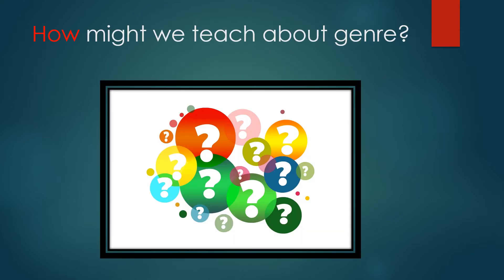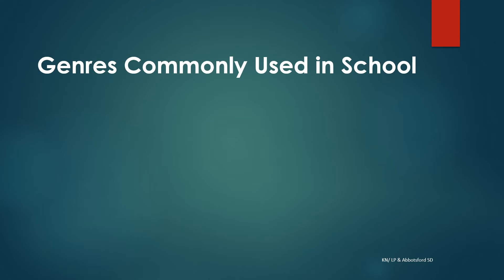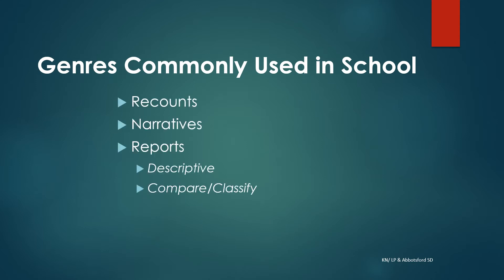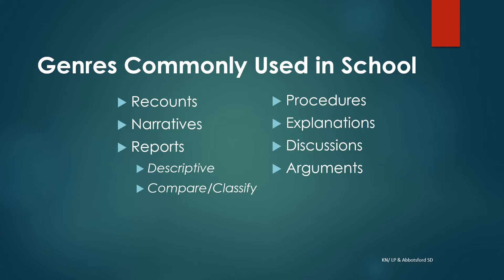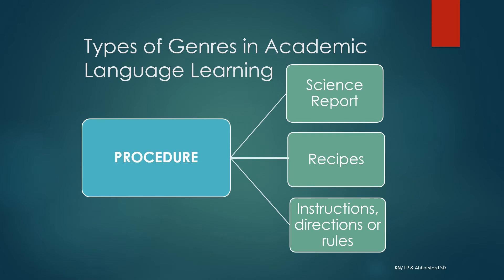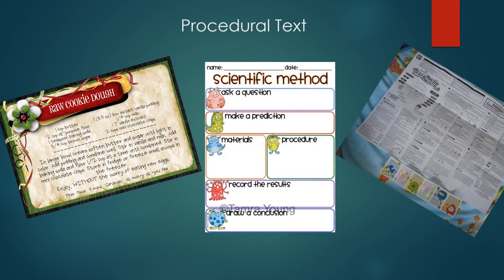Now that we know what genre is and why it's important, let's consider how we might teach about genre. Here are the main genres commonly used in school — take a moment to read through them. Our first genre is procedural text. The purpose of procedural text is to provide instructions about how to make or do something. Some examples might include instructions, experiments, do-it-yourself blogs, recipes, and so on. Here are some examples of procedural text: a recipe, a science lab graphic organizer, and an instruction manual for Tamagotchis.